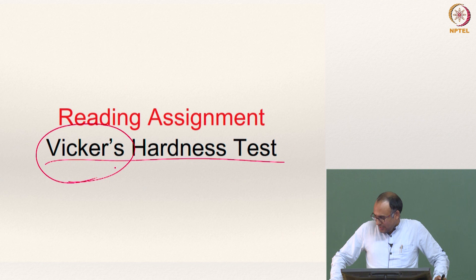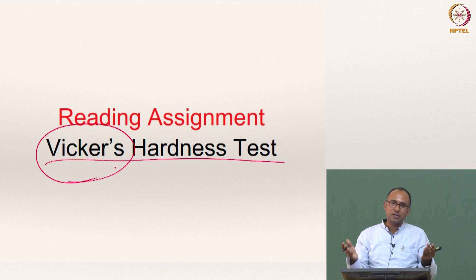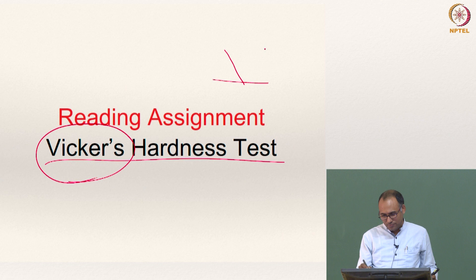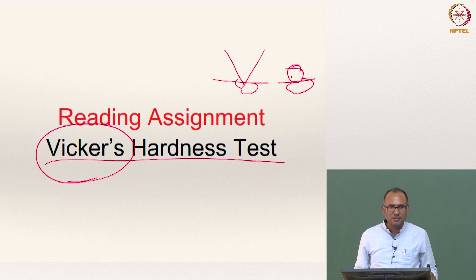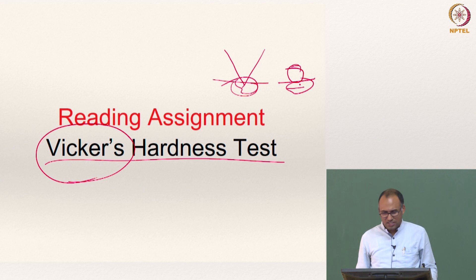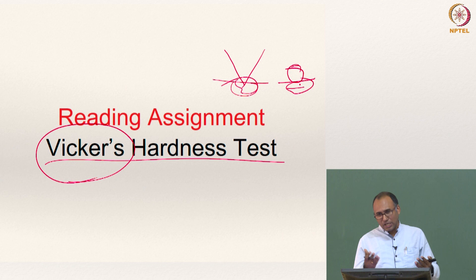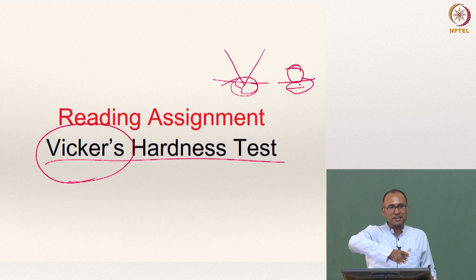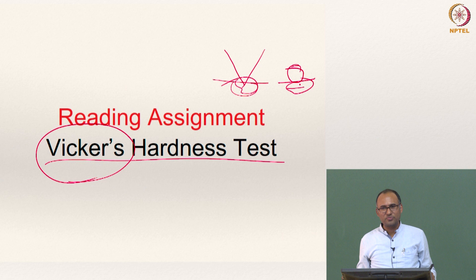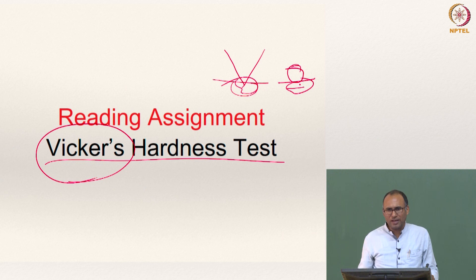The hardness scales are relative because the indenter shapes are different. The fact that the indenter shapes differ means the local stress state below the indenter is completely different. The stress state is much more severe for a sharp cone compared to a sphere. To my knowledge, there are no direct correlations from one scale to another. In principle, one could test the same material using Rockwell A, B, C, D and try to find an empirical formula. Maybe such correlations exist, but I am not aware of them — it is a good exercise to verify.